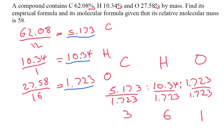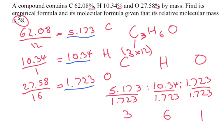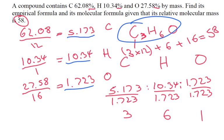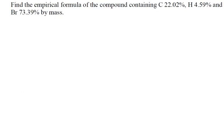So our empirical formula is C3H6O. Now let's check: how many times will this go into our relative molecular mass? 3 times 12 plus 6 plus 16 gives us 58. So it looks like our answer: C3H6O is both the empirical formula and also the molecular formula.